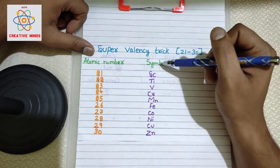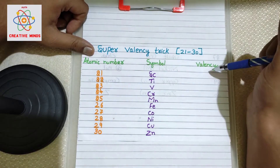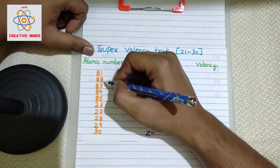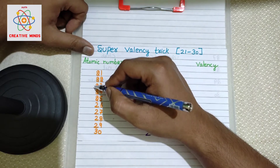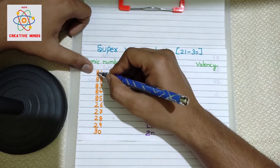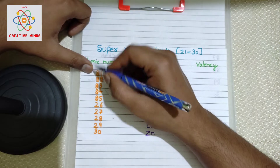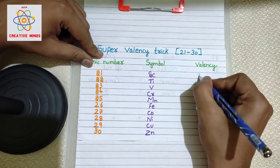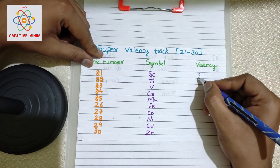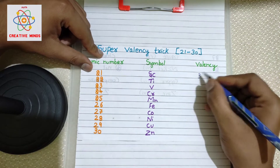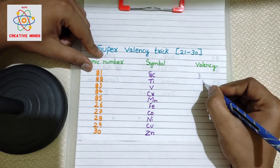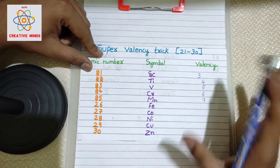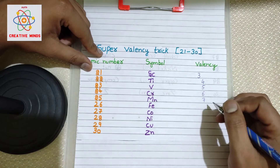Here I have written the atomic numbers, symbols, and we will be writing the valences. Now look at the numbers carefully — we are dealing with 21, 22, 23, the 20s. Focus on the two: if we add one to two the next number is three. So write three here, then keep adding one: three, four, five, six, seven — stop here.